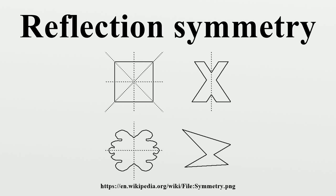Thus a square has four axes of symmetry, because there are four different ways to fold it and have the edges all match. A circle has infinitely many axes of symmetry.